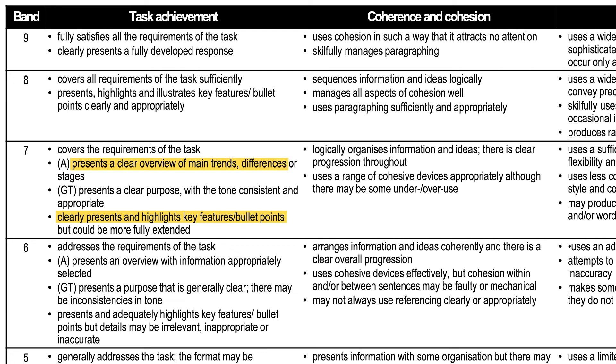Writing Task 1 requires you to write a report in only about 20 minutes. You cannot include every single element from your graph in the writing, and you should not try to include everything. IELTS is testing you on two things with this task that are outside of English ability: what key features you include, and what key features you do not include.